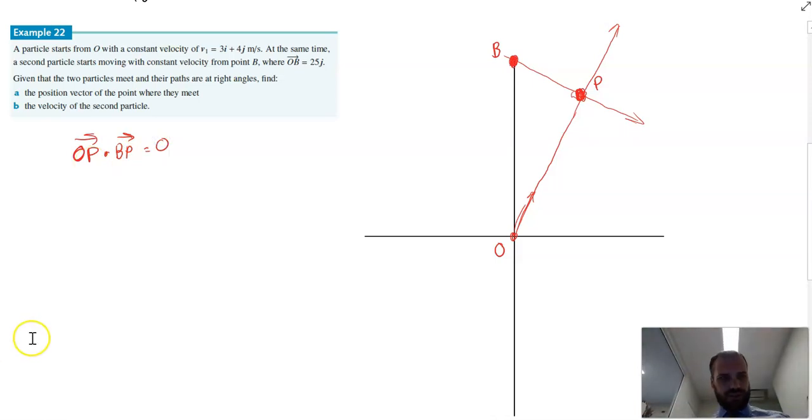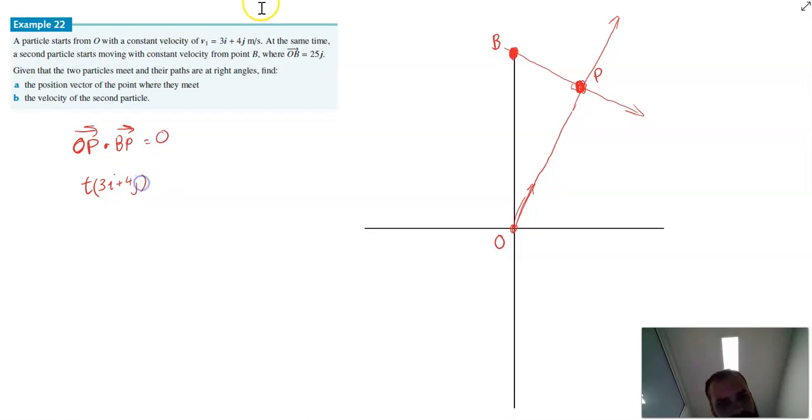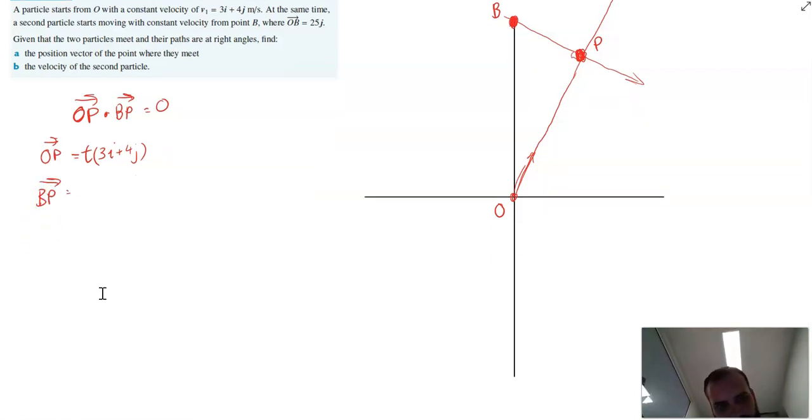Now, what we can say is that vector OP dot vector BP is going to be equal to zero. So vector OP, vector OP is going to be the velocity vector times time. So T bracket 3i plus 4j, that's going to be vector OP. Now, if we want to know vector BP, we could say that that's vector BO plus OP.